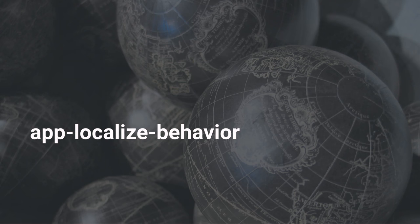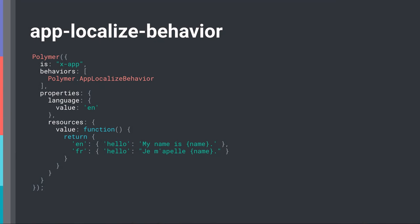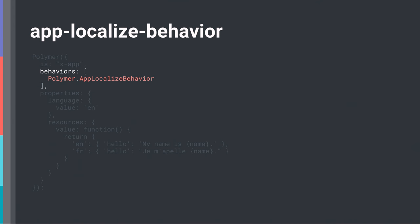So we built the app localized behavior. What's great about it is it uses the platform — it uses the Intl object, which is a standard JavaScript object, to provide localization data. It's broadly cross-browser supported, and where it doesn't support it, there's a polyfill. To use the app localized behavior, you add it as a behavior to your component and give it two properties: a language property for the language you want the component translated to, and a resources property with all the keys and translation strings needed for that component.